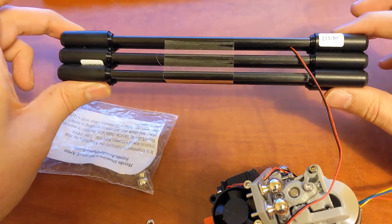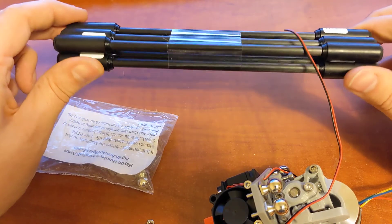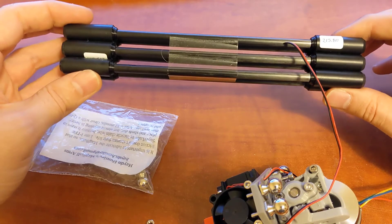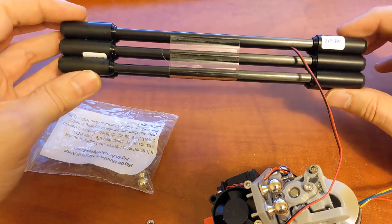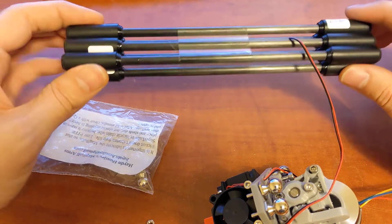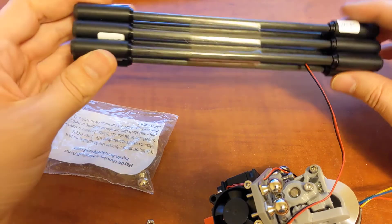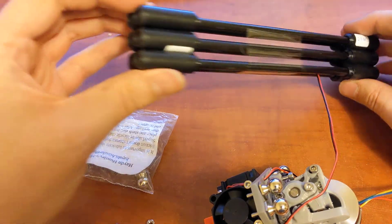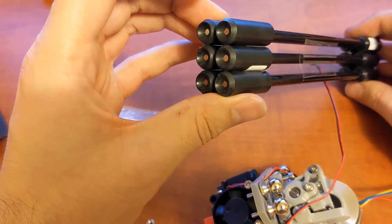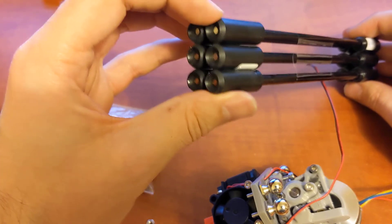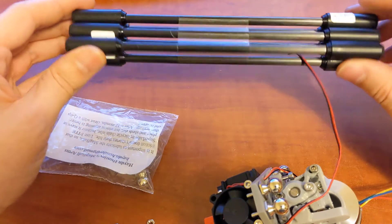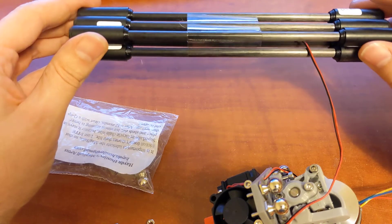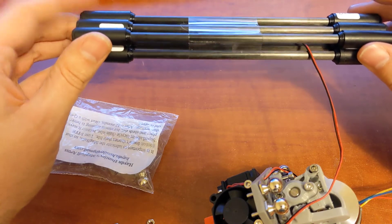This is the most important part of a delta. Don't cheap out on arms. This can basically ruin your print quality if you have really loose arms or really stiff arms. The benefit of magnetic arms is very little friction and they're very, very tight. There's no play in these.